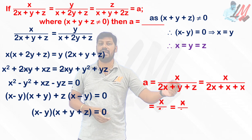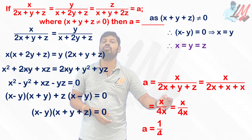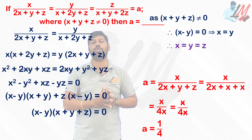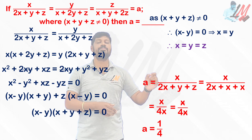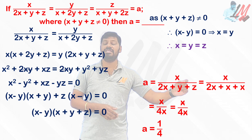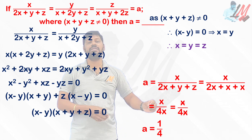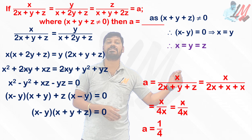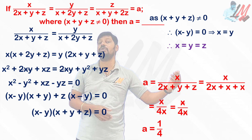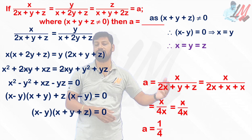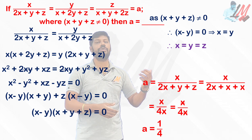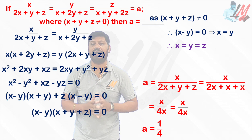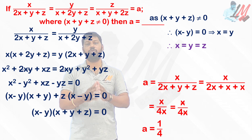Since a equals any one of the three fractions, take a = x/(2x+y+z). We are supposed to find the numerical value of a. Simply replacing y and z with x gives: a = x/(2x + x + x) = x/(4x). Cancelling x, we get a = 1/4. So the numerical value of a is 1/4.